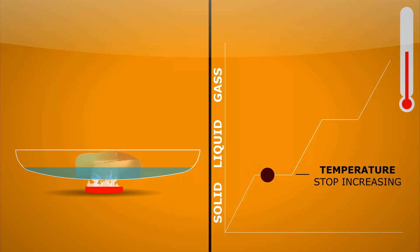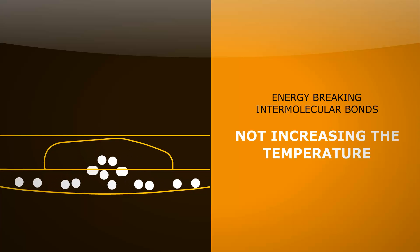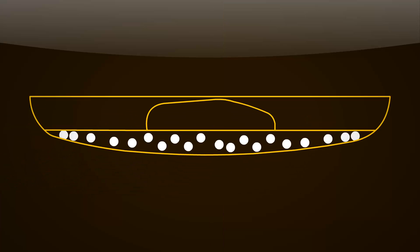Hang about, the temperature stopped increasing even though we're still heating it. This is because all the energy going in is going into breaking the intermolecular bonds, not increasing the temperature. So only once all those intermolecular bonds are broken can the temperature start increasing again.